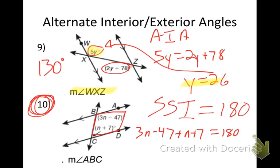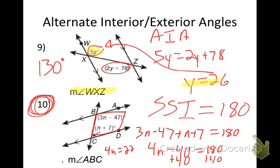When I work it out: 3N + N = 4N, and −47 + 7 = −40, so 4N − 40 = 180. Add 40 to get 4N = 220. Divide and I get N = 55.